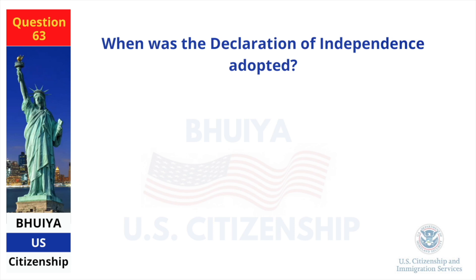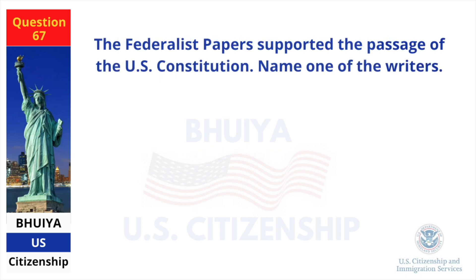When was the Declaration of Independence adopted? July 4, 1776. The Federalist Papers supported the passage of the US Constitution. Name one of the writers. James Madison.